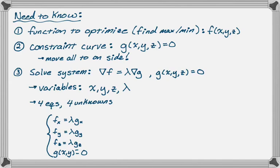We're going to solve the system: gradient of f equals lambda gradient of g, and g(x,y,z) equals zero, which means we have four variables x, y, z, and lambda. But we also have four equations, so four equations and four unknowns. The equation everyone always forgets is g(x,y,z) equals zero.